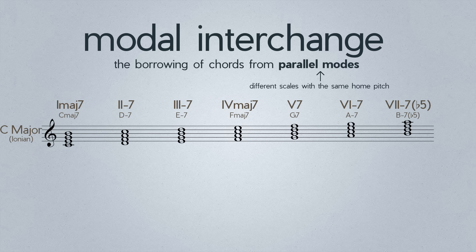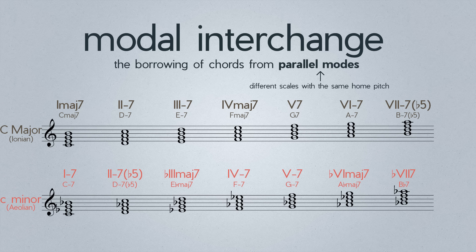For example, C major and C minor. Since these are different modes, they contain different diatonic chords. This is where the magic happens.